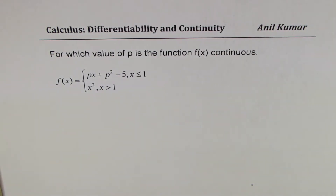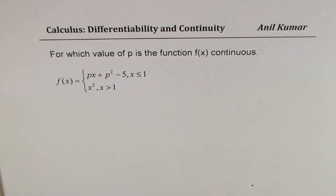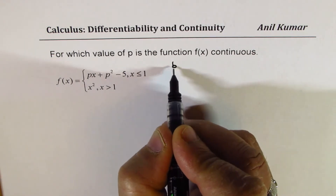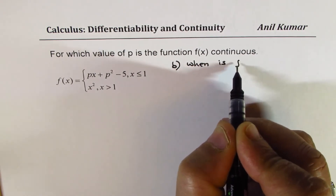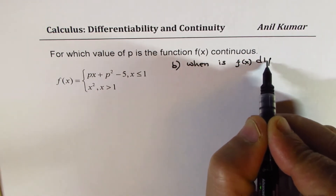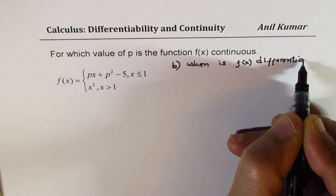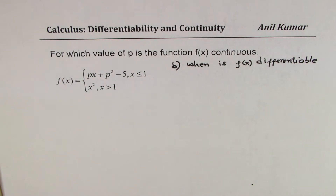I'm Anil Kumar sharing with you a question which will help you understand the concept of differentiability and continuity. The question is: for which value of p is the function f of x continuous? The function is f of x equals 2px plus p squared minus 5 when x is less than or equal to 1, and it equals x squared when x is greater than 1. I will add part b where we will discuss when f of x is differentiable. We will see how and why the answers are different — that is very important to understand.